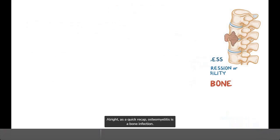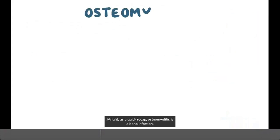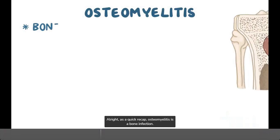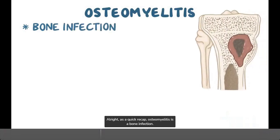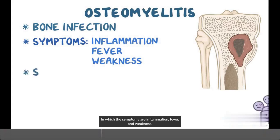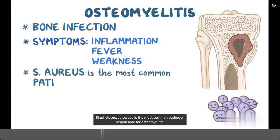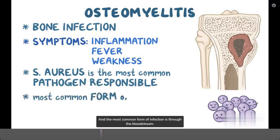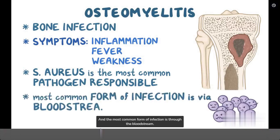As a quick recap, osteomyelitis is a bone infection in which the symptoms are inflammation, fever, and weakness. Staphylococcus aureus is the most common pathogen responsible for osteomyelitis, and the most common form of infection is through the bloodstream.